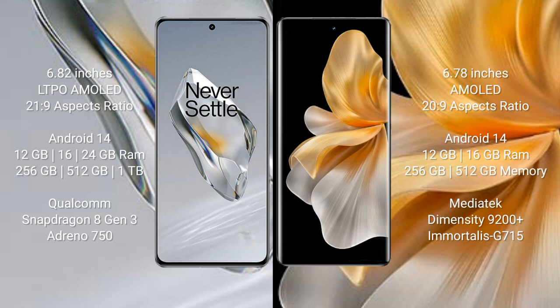OnePlus 12 runs on the Android 14 operating system. Vivo S18 Pro also runs on the Android 14 operating system. OnePlus 12 comes with 12GB, 16GB, or 24GB RAM and 256GB, 512GB, or 1TB internal storage, with a Qualcomm Snapdragon 8 Gen 3 processor and GPU Adreno 750.